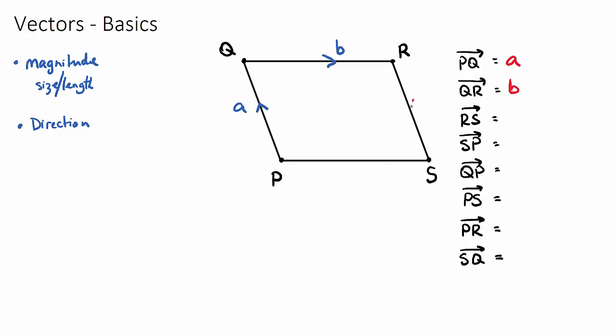But from R to S, we would be going in this direction. Hopefully you can understand that the vector which goes from R to S, the journey, is actually the same as this vector A but in the opposite direction. R to S would be negative A because it's the same distance but it's in the negative direction, opposite direction.